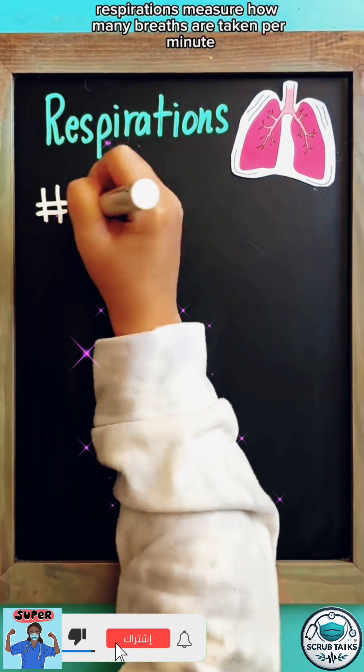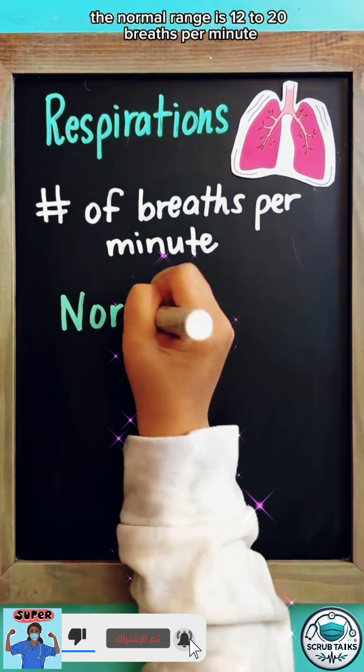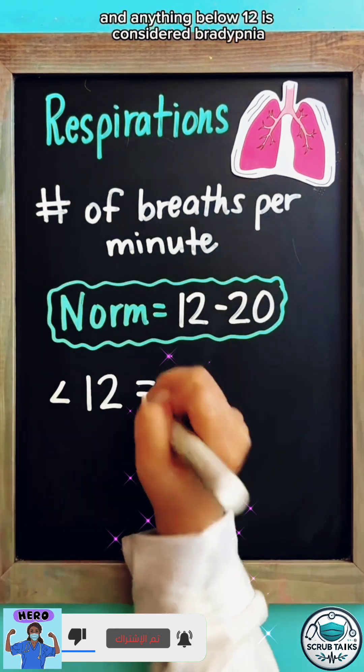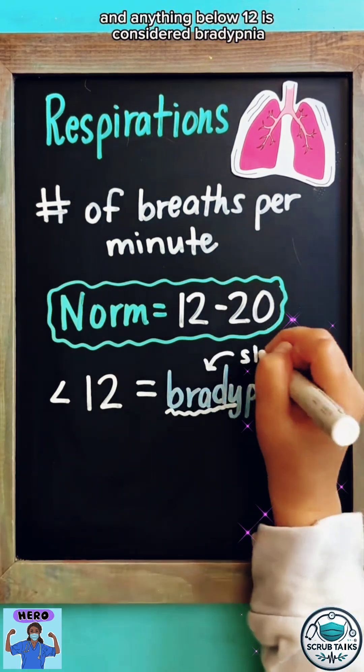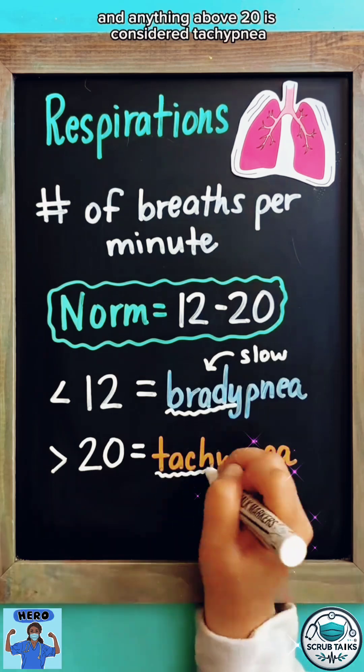Respirations measure how many breaths are taken per minute. The normal range is 12 to 20 breaths per minute and anything below 12 is considered bradypnea and anything above 20 is considered tachypnea.